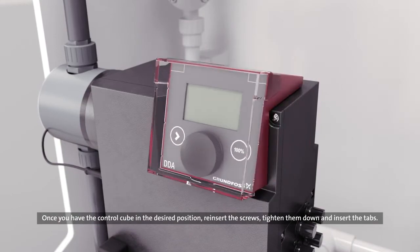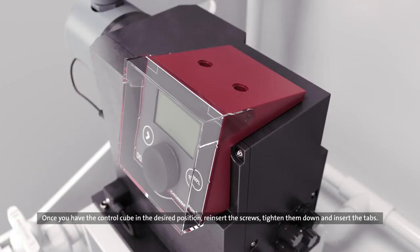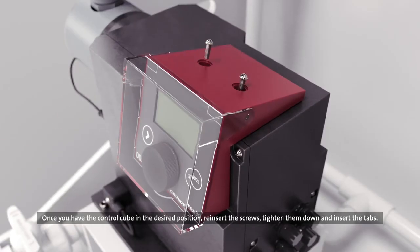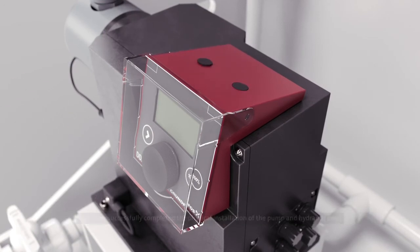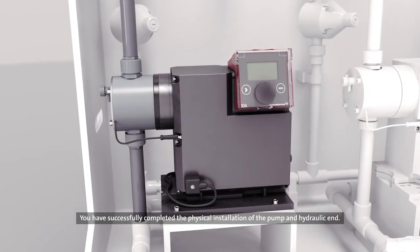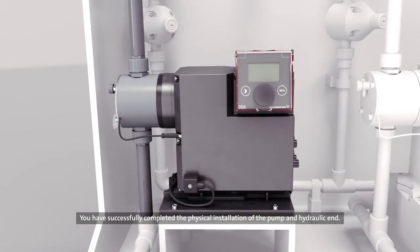Once you have the control cube in the desired position, reinsert the screws, tighten them down, and insert the tabs. You have successfully completed the physical installation of the pump and hydraulic end.